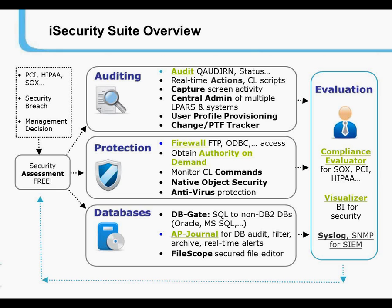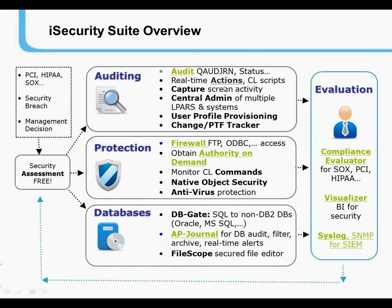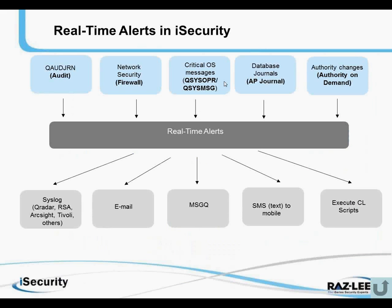iSecurity also supports Syslog and SNMP integration. These are the companies we integrate with: RSA Tivoli, IBM, Q1 Labs, McAfee, HP OpenView, ArcSight, and others. From the IBM i, our products use Syslog to integrate with all these different products, sending out real-time security-related alerts to various SIEM and DAM — database activity monitoring — products.